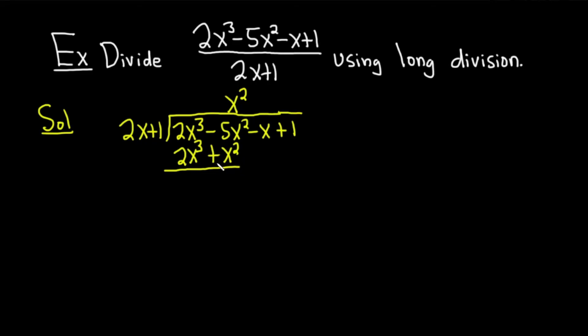Some people change the signs. What I do is I put parentheses and a big minus sign and I add. So 2x³ plus a negative 2x³ is 0. -5x² minus x² is -6x². And then you bring down the next term, a -x.